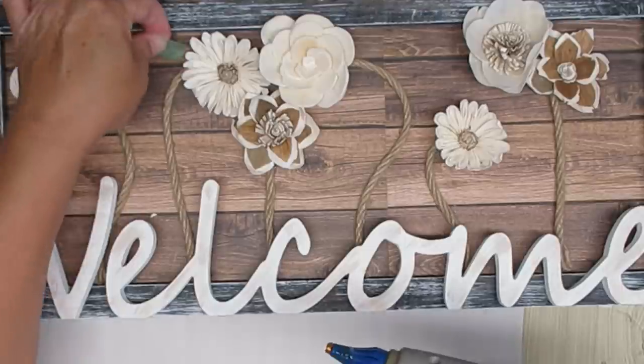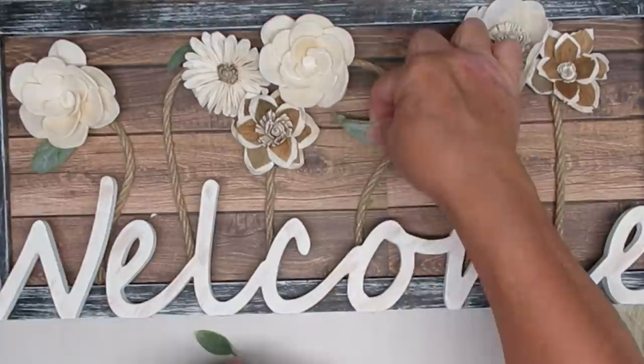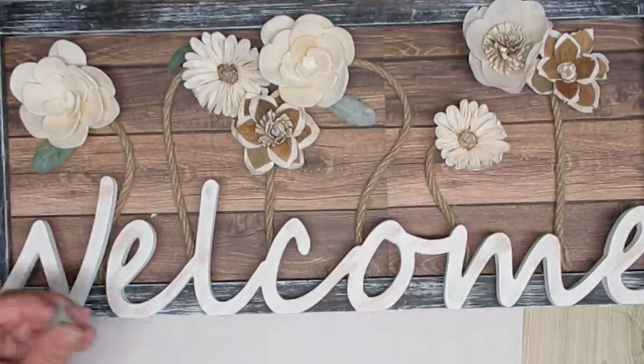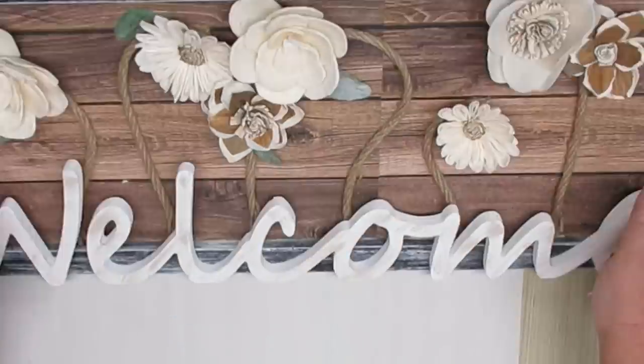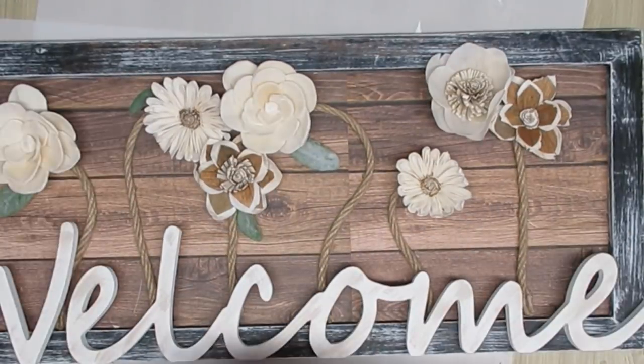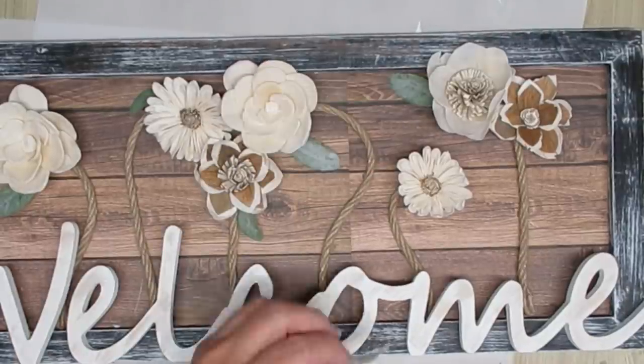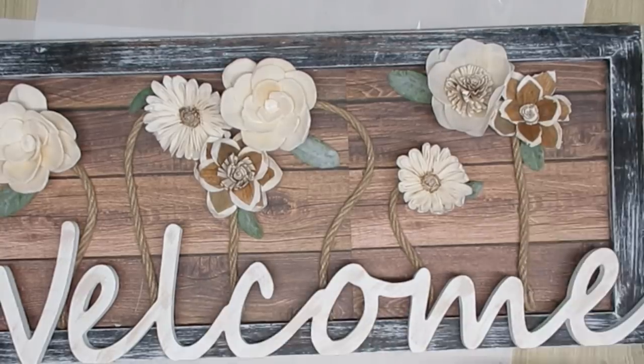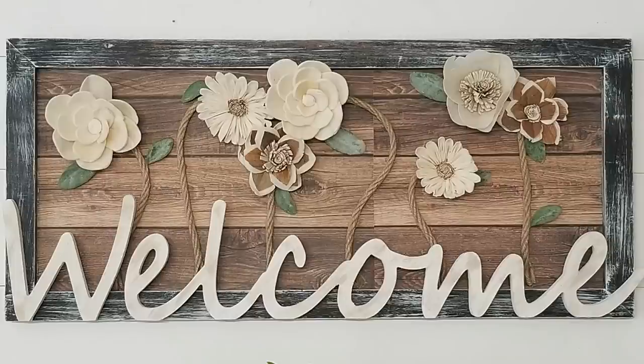The last thing I did was take some lamb's ear leaves that I have in my stash and glue them in different areas along the flowers. I love the combination of sola wood flowers and lamb's ear. I just think that soft green color works perfectly with them and I couldn't be happier with how this sign turned out. It's a little different. It's something that I've never done before but I really love it and I hope you like it too.